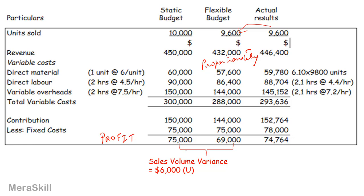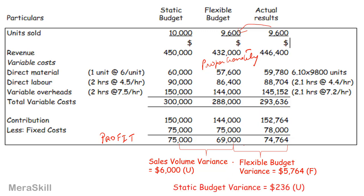Now comparing the standard cost for 9,600 units with the actual results, the actual profits are higher — so we have a favorable flexible budget variance of 5,764. Together, the sales volume variance of 6,000 unfavorable and the flexible budget variance of 5,764 favorable give the overall static budget variance of 236 unfavorable, which is what we were aiming for.